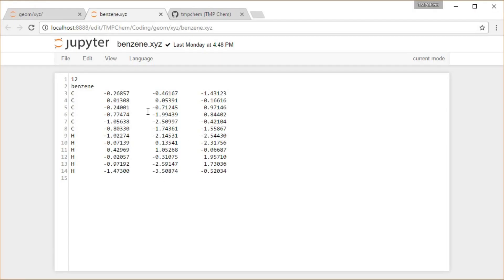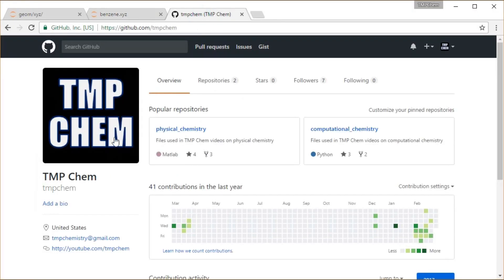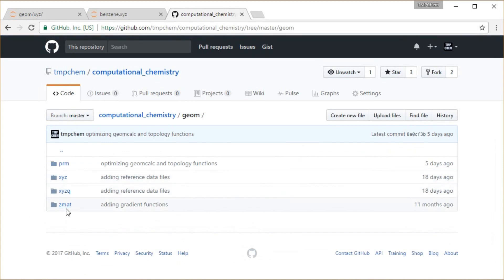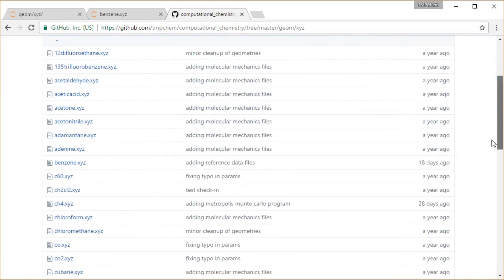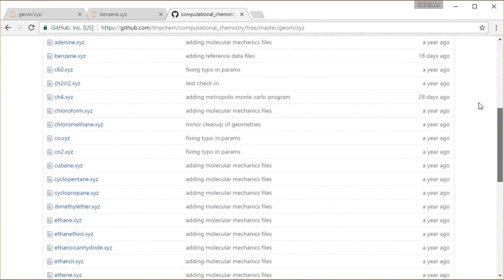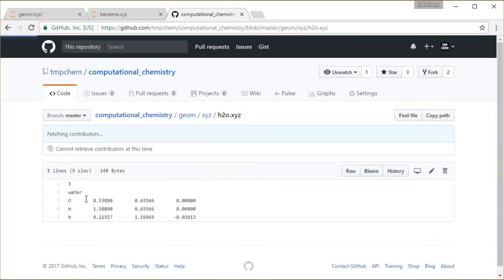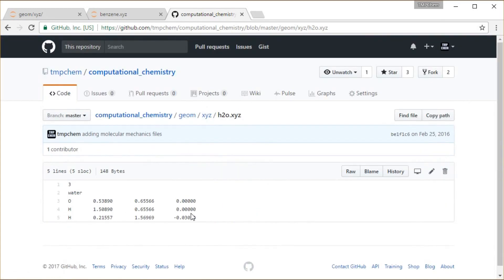Okay, if you want to look at some of these on my GitHub page, github.com/tmpchem, if you go into the Computational Chemistry Repository, that'll open. Go down to the geom subdirectory, and then X, Y, Z, and I've got a ton of X, Y, Z files that you can use in there for examining in the couple videos that we're going to be taking a look at here.